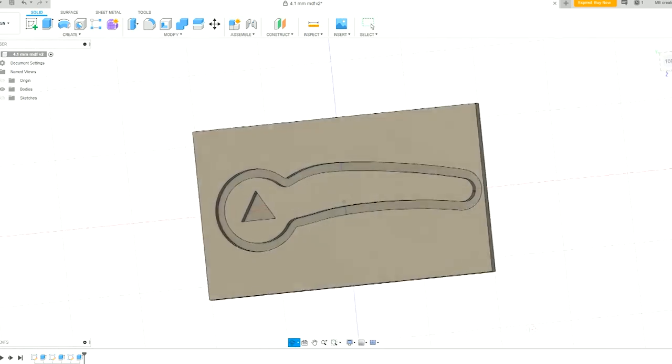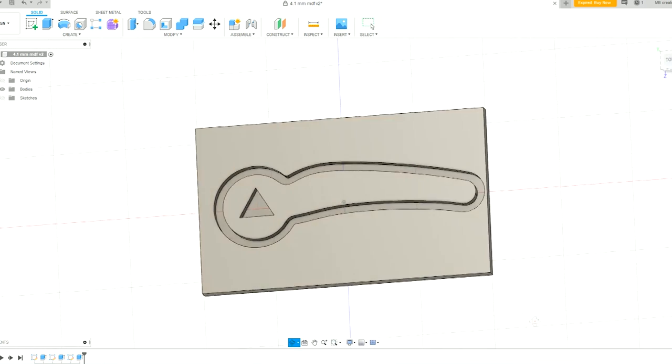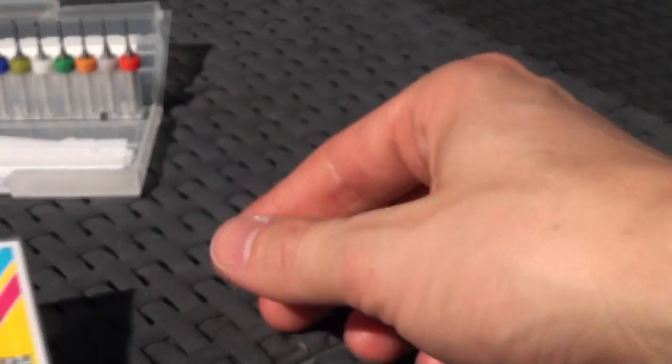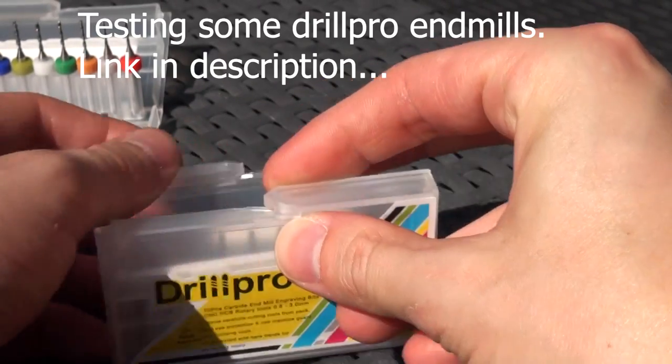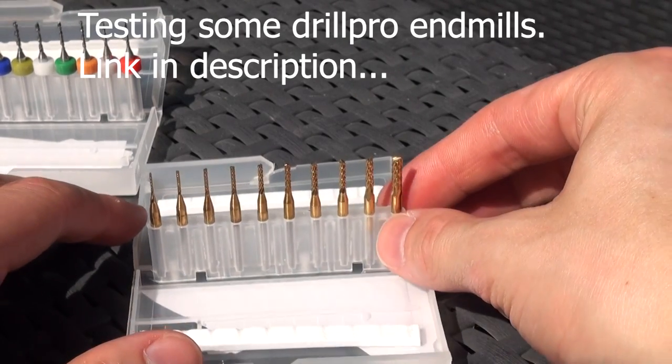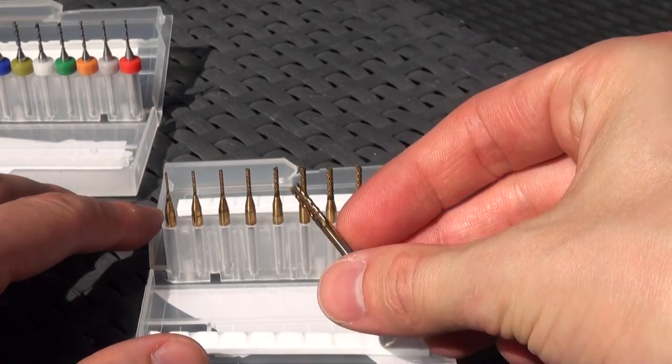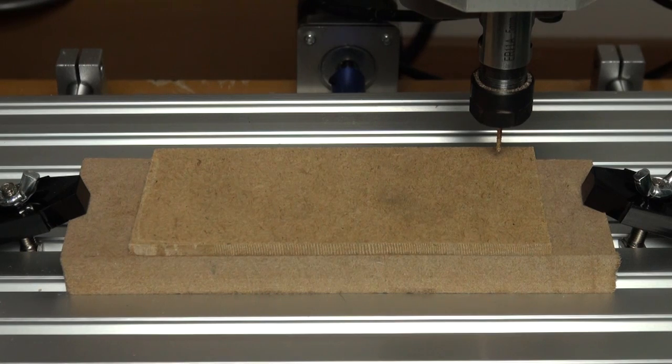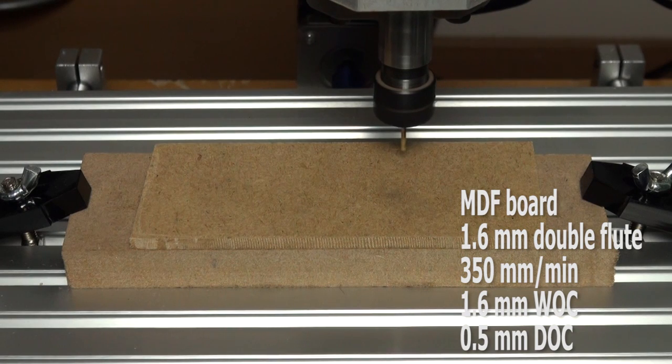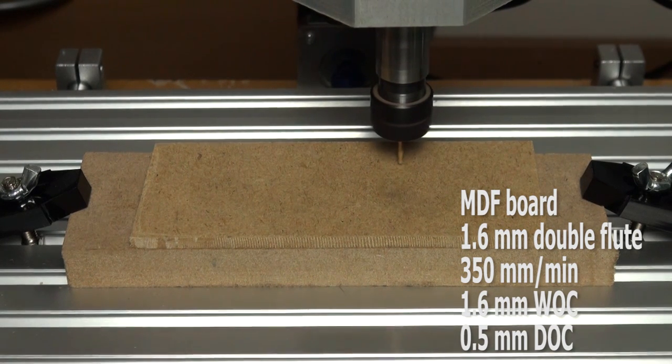The last test on the MDF board was making this lever with the triangle shapes in it.